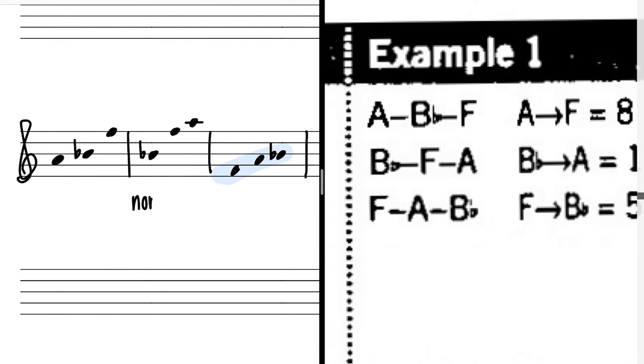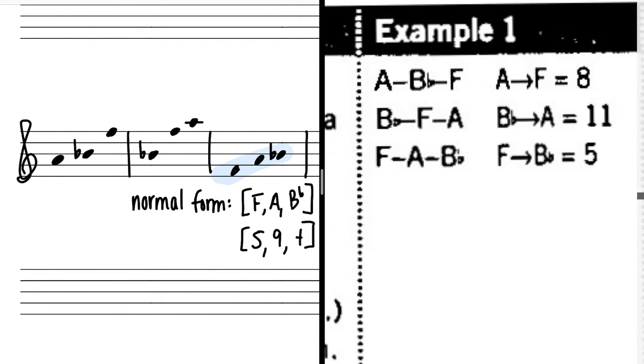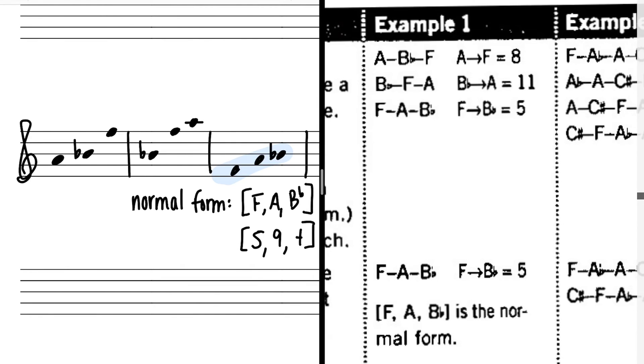So the normal form is F, A, B flat, also known as 5, 9, 10.